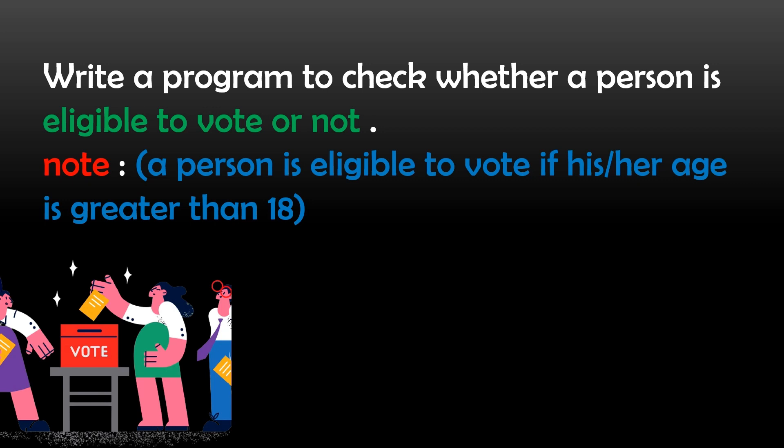They have given a note that a person is eligible to vote if his or her age is greater than 18. In the scenario described, a person comes to a voting booth where there will be an officer. He hands over some documents for verification, and then the officer tells him whether he is eligible to vote or not.